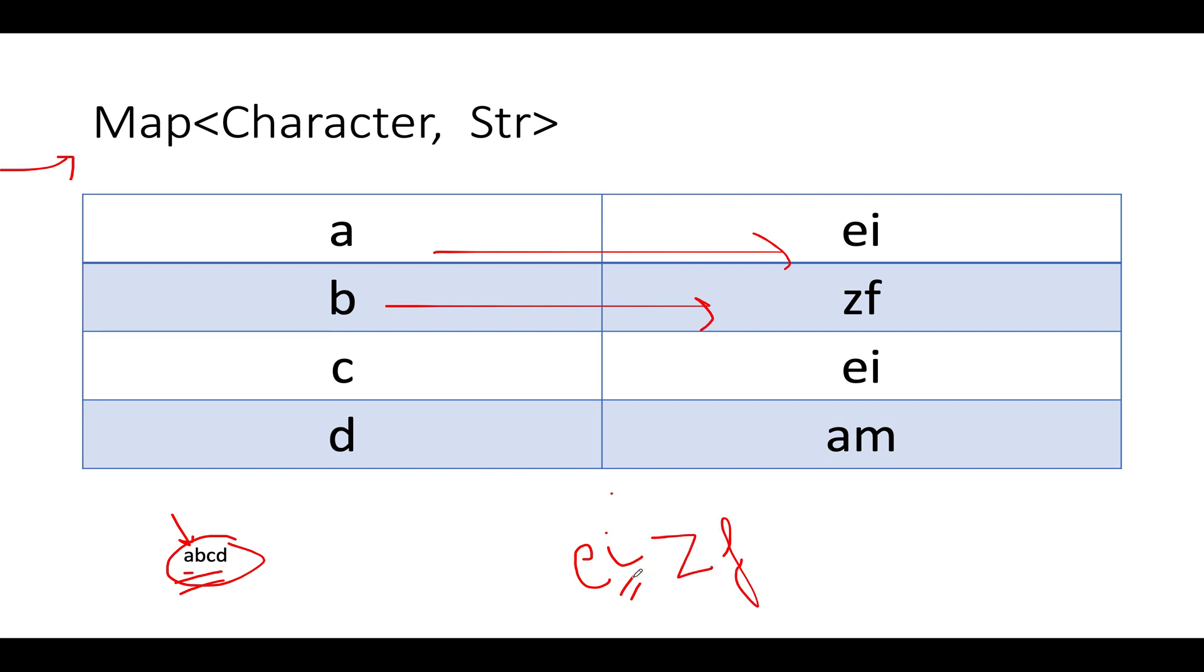Let's proceed ahead. Next we see C, and C maps to EI again. I'll go and append EI again onto my encrypted string. Then I have D, D maps to AM, and as a result of which I'll append AM onto my encrypted string. Once I'm done with these iterations of all the characters that are present in my input string, I successfully encrypted it.